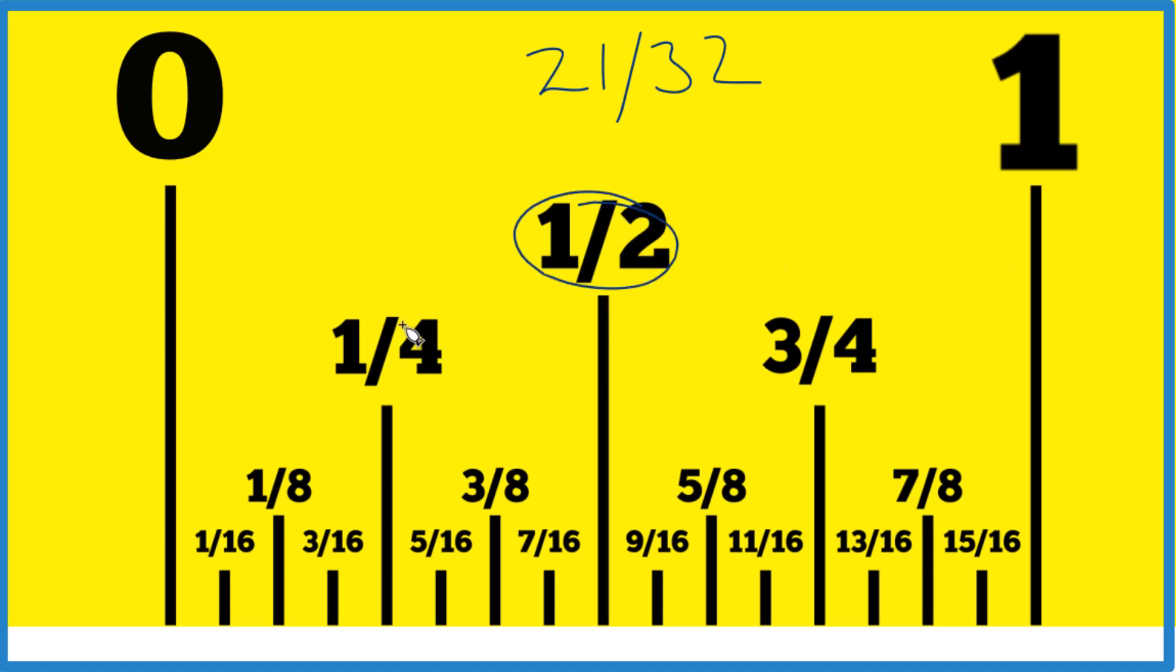We cut it in half, we have a half. Cut that in half, we get a fourth. Cut the fourth in half, 1/8th, 1/16th, and when we cut 1/16th in half, we end up with 32nds. So right here, this is 1/32nd of an inch.